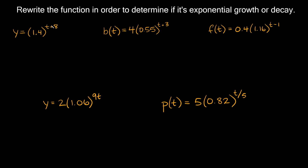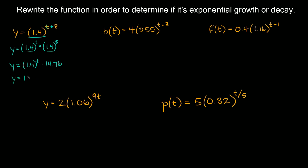When you have an exponent with addition, you break it up into multiplication. So for y = 1.4^(t+8), we rewrite it as y = 1.4^t × 1.4^8. Then we simplify: 1.4^8 is approximately 14.76, giving us y = 1.4^t × 14.76.